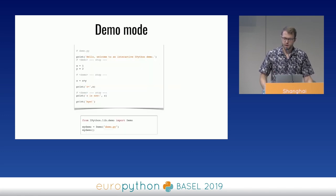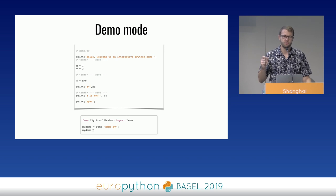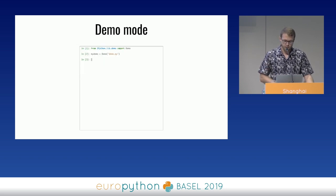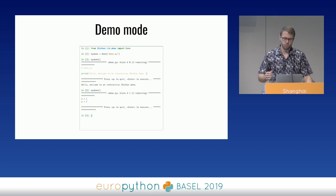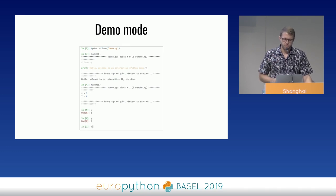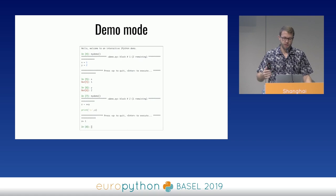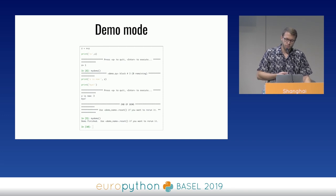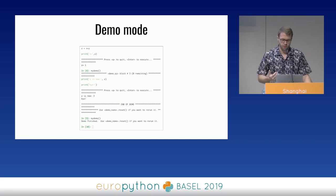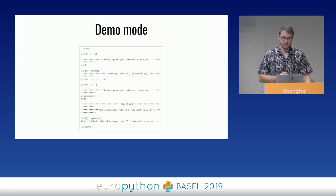There's a demo mode in IPython. To use it, you create a Python file with some simple markup in the comments, then load that file into a demo object. Each time you call the demo object, IPython will execute the next block of code in the current namespace. You'll have access to all the variables and functions created in that block and can play with them before executing the next block. Demo mode is pretty similar to what you can do with Jupyter Notebooks, but if you live in a terminal and want to impress colleagues with a cool coding demo for a presentation, this is a great tool.